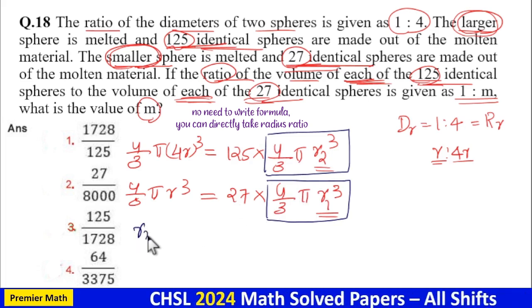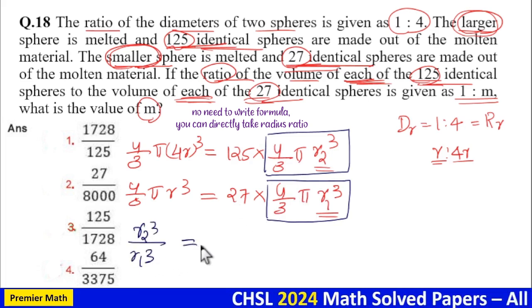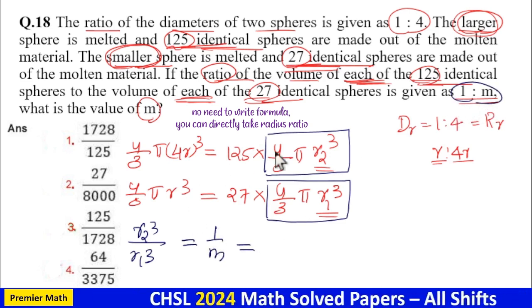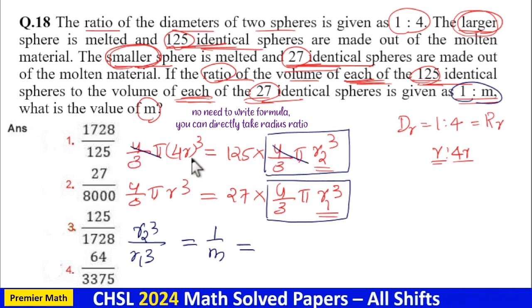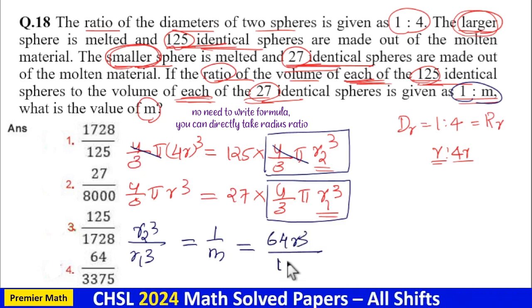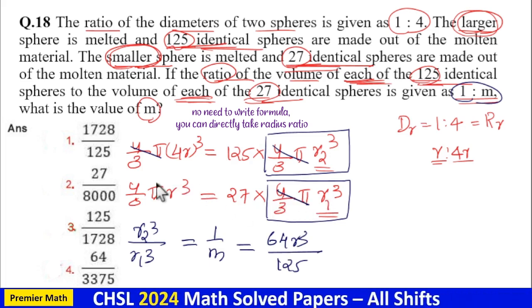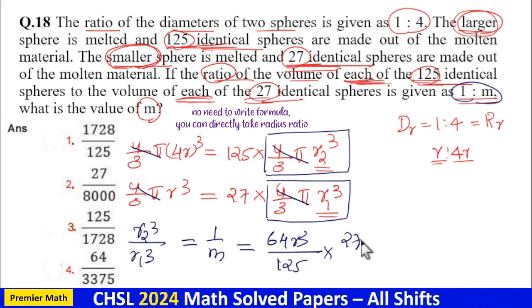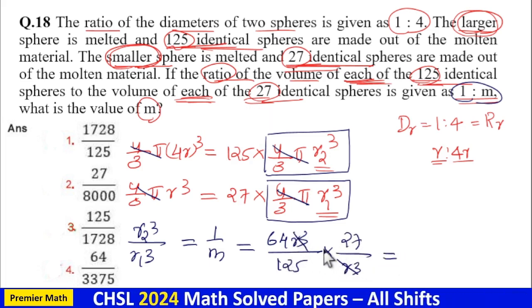So we need the ratio r2³ / r1³, which equals 1:m. From the large sphere equation, the (4/3)π terms cancel, giving r2³ = 64r³ / 125. From the small sphere equation, (4/3)π terms cancel, giving r1³ = r³ / 27. Now r³ cancels in the ratio r2³ / r1³.